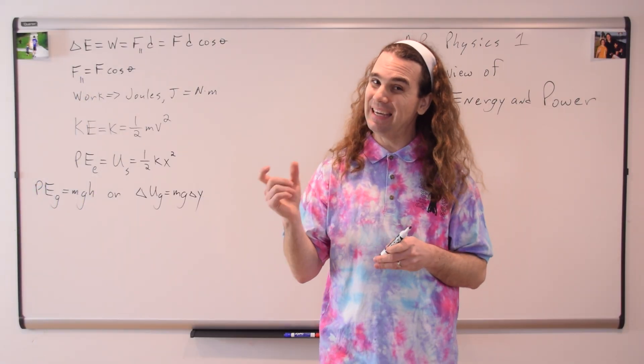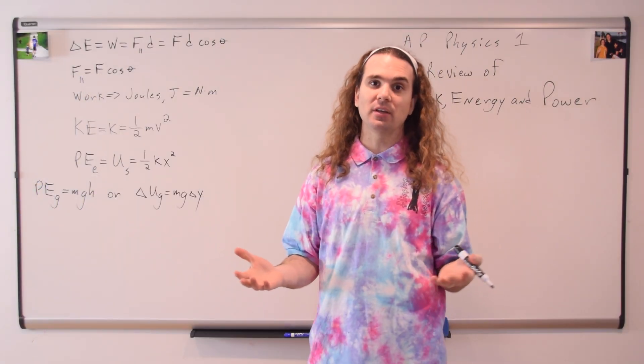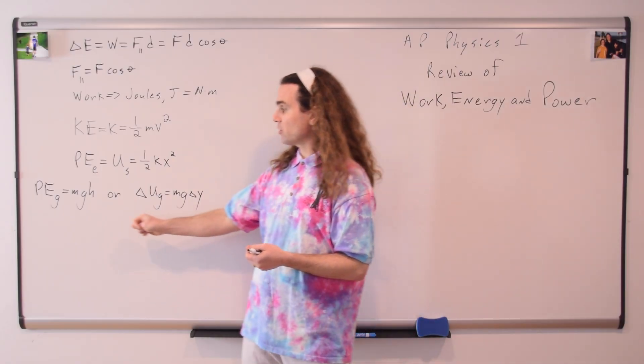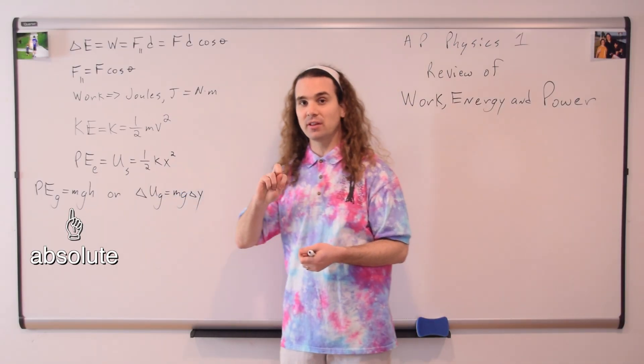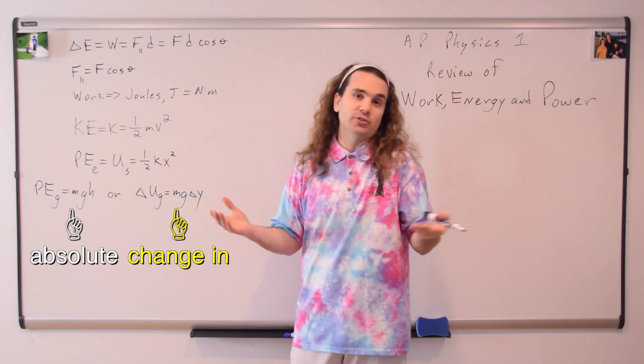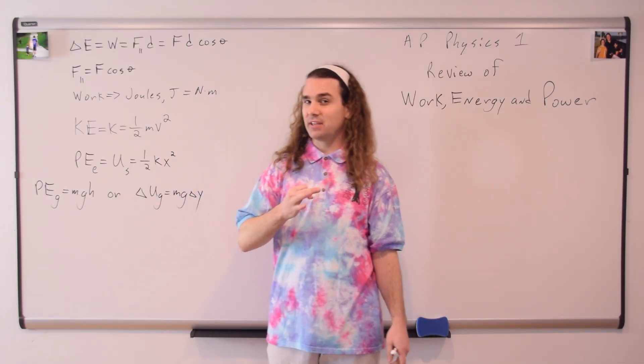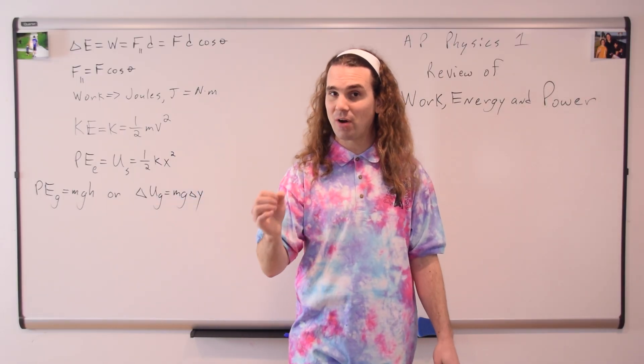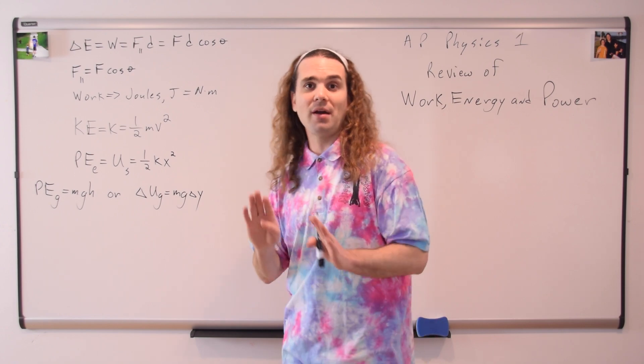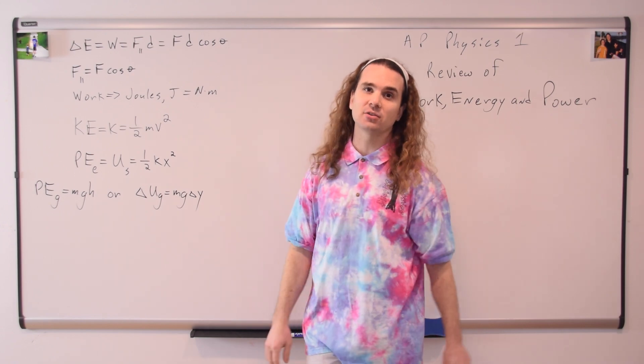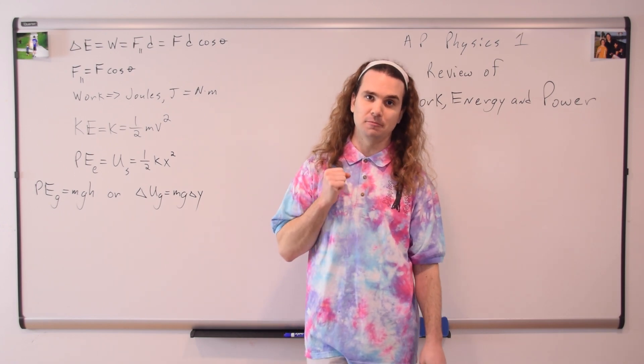Right. Again, I prefer PE sub G for gravitational potential energy, and also I usually refer to it in terms of absolute gravitational potential energy rather than a change in gravitational potential energy. This equation is for the gravitational potential energy in a constant gravitational field. We'll get to the gravitational potential energy in a non-constant gravitational field in just a little bit.